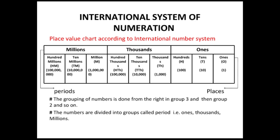First, we will study how to represent a number in the international number system. For that, we will make a place value chart. As you can see, I have already made a place value chart here with three major columns. These columns are the groups called periods: ones, thousands, and millions. Inside those groups are the places where we put the digits of any number. In ones, we have the places: ones, tens, and hundreds.